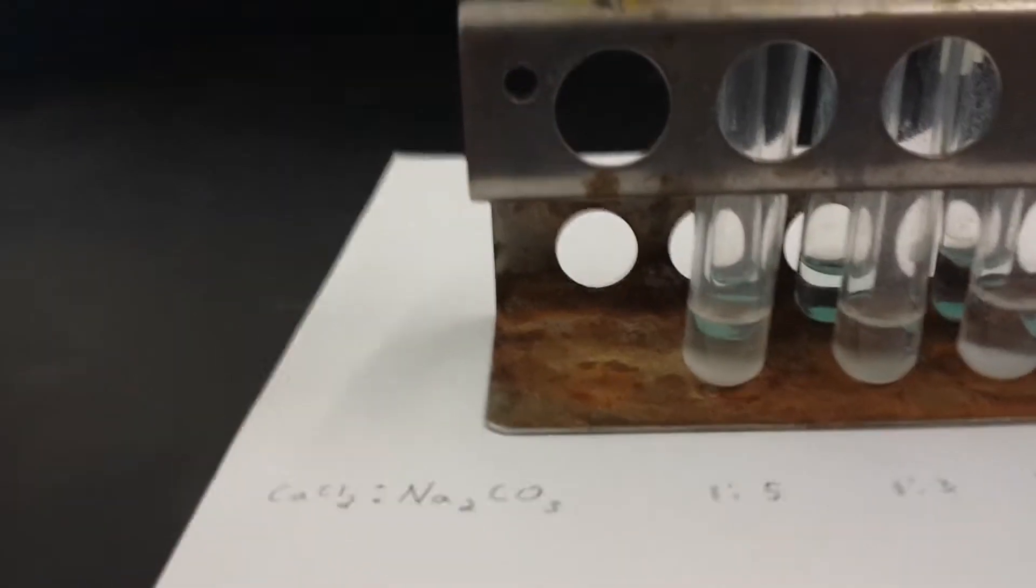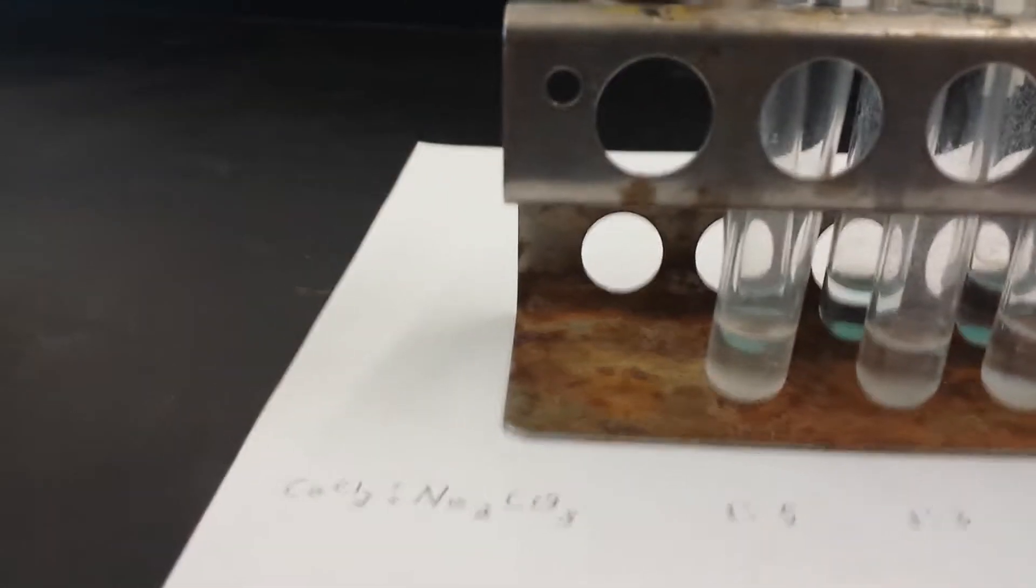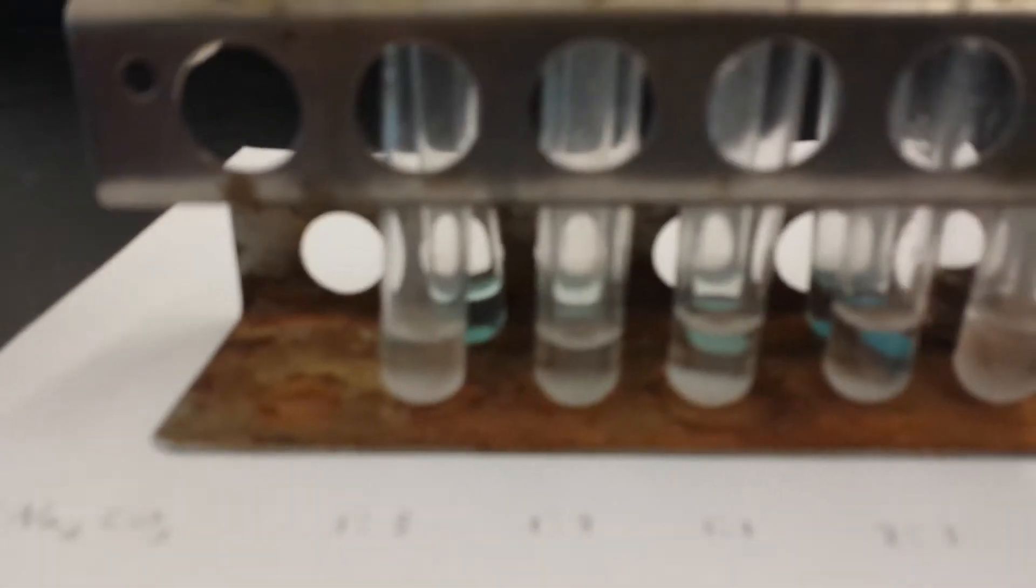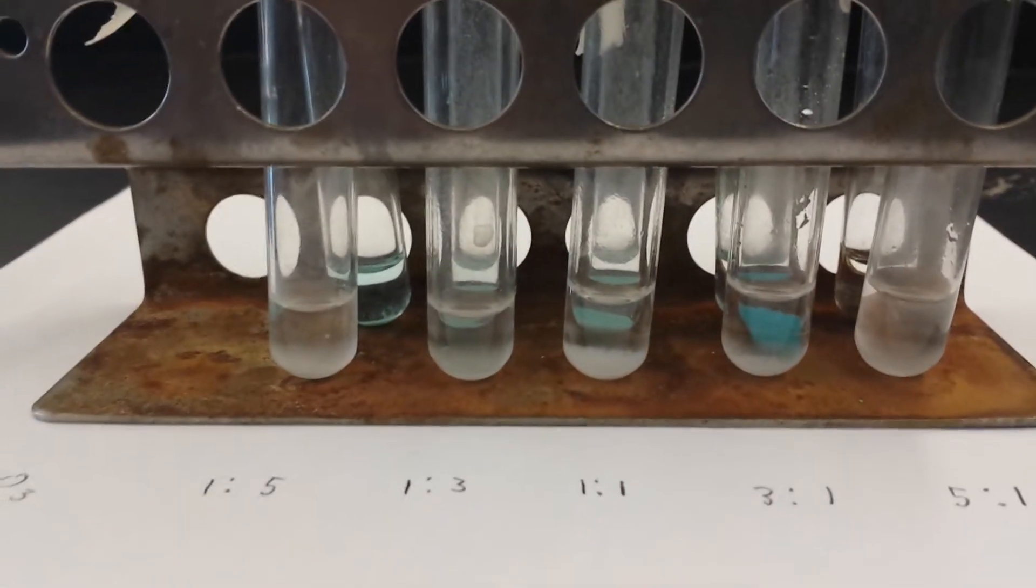Okay, in lesson 24, we see that when we mix different numbers of drops of calcium chloride and sodium carbonate, we get different amounts of precipitate.